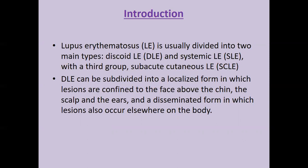As far as DLE is concerned, it is mainly subdivided into two forms: the localized form and the disseminated form. The localized form is usually confined to photo-exposed areas, that is the face, neck, ears, and scalp, while the disseminated form can spread to any part of the body.